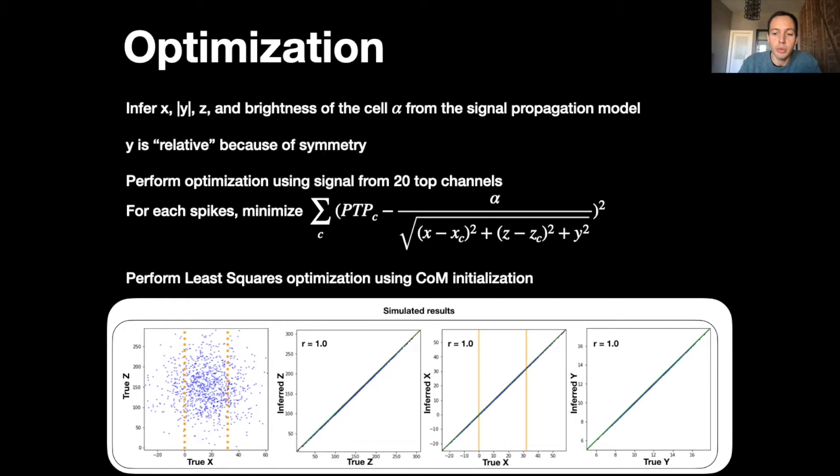Our method that we use is least-square optimization after initializing with center of mass. On simulated data where we simulate 3D positions and the corresponding PTP on all channels, we find that this optimization method recovers perfectly the four parameters X, Y, Z and alpha, which shows that it is a suited optimization method for this task.